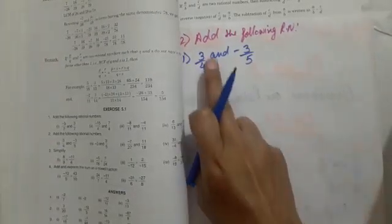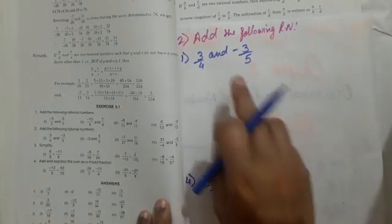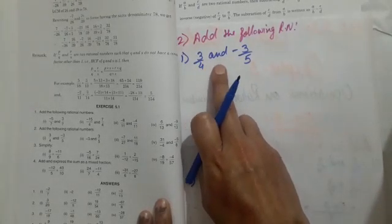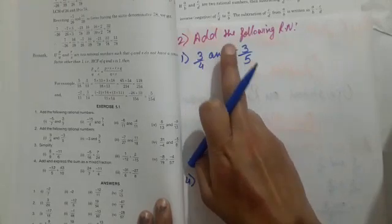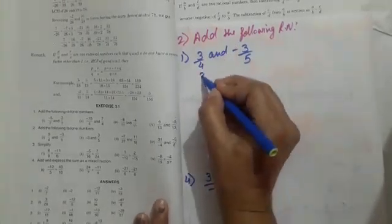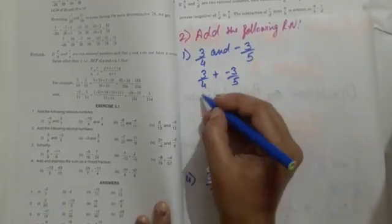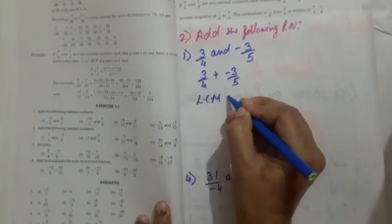Now look at here, we have the second sum. First sum, first two parts I have done, next two you can do. So now we are on the second sum: 3/4 and -3/5. Add the following.